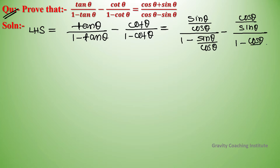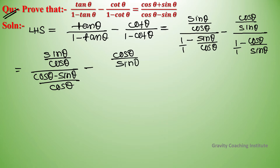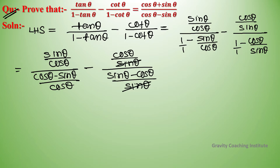Simplifying each fraction: for the first term, sin theta upon cos theta divided by the expression gives sin theta upon cos theta minus sin theta. For the second term, cos theta upon sin theta simplifies to cos theta upon sin theta minus cos theta. Then sin theta cancels with sin theta and cos cancels with cos.